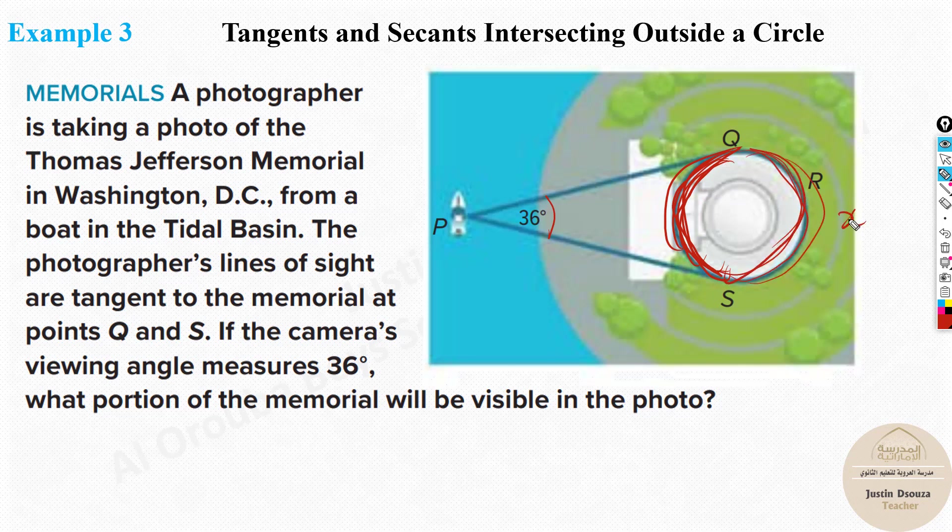How do we find this part which is visible? I will take this part as X over here. This over here will be 360 minus X. Why? Because if this is X, the total is 360. So this must be 360 minus X. And this is 36. So let's write it as formula. We know 36 degrees will be equal to half of the outer, the bigger one, X minus 360 minus X.